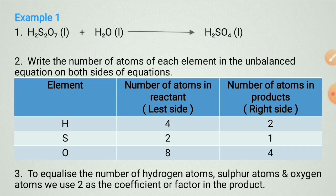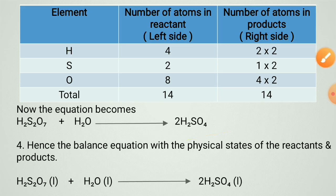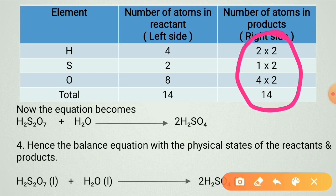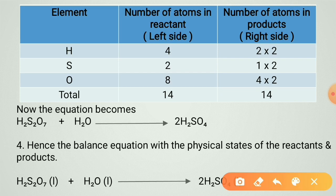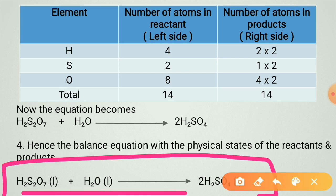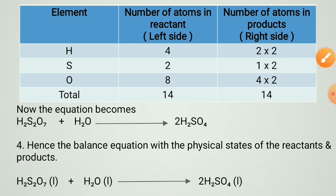To equalize hydrogen, sulfur, and oxygen atoms, use two as the coefficient on the product side. After multiplying two on the product side, count the number of atoms — you will find they are the same. Finally, write the equation with the physical states of the reactants and products.